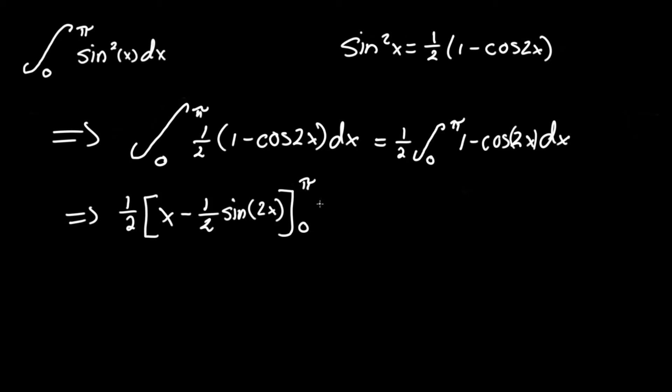Now all we've got to do is plug in some numbers, and that will give us our solution. So this equals one half—let's put another parenthesis around all this—one half times pi. We're plugging pi in for x now, minus one half sine of 2 times pi, so 2 pi.